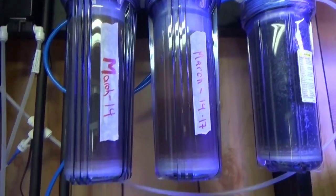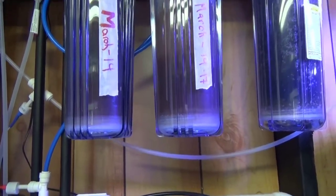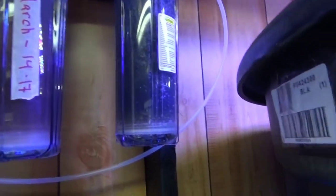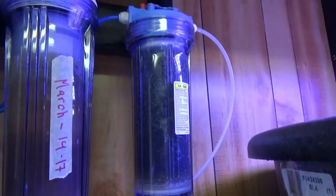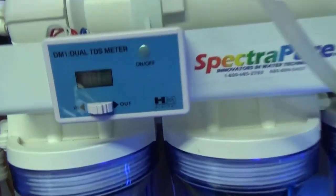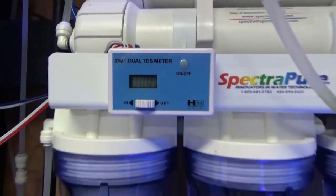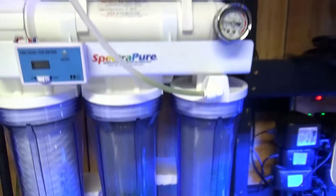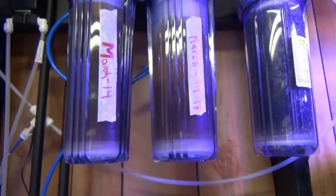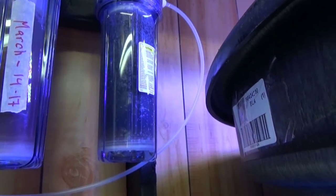These look like they're both depleted—they both look like they're that brown color. If you see this one over here, it's still blue. Now my TDS meter is still reading zero, which is pretty awesome, but I'm gonna change these anyway. I'm gonna change the DI and move this one over.